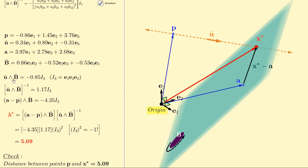The multiplicative inverse of u hat wedged b hat is 1.17 i3, and a minus p wedged with b hat is negative 4.35 i3.